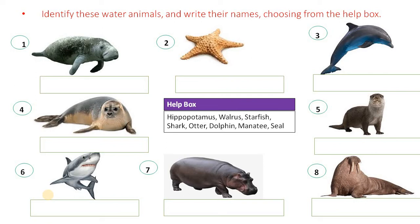First, Manatee. This is manatee. Manatees are also called sea cow. It is fully aquatic. Number 2, Starfish. And you know, starfish are not fish.